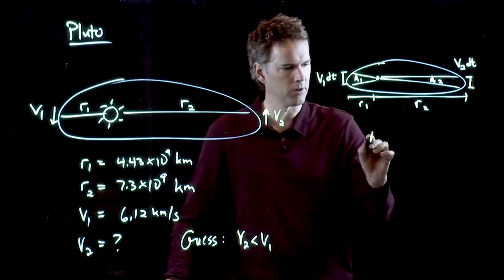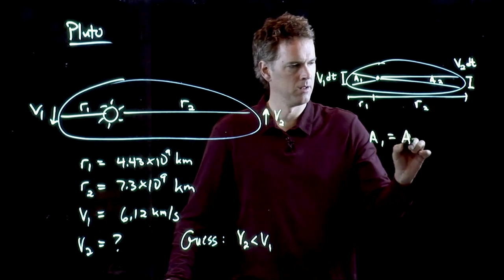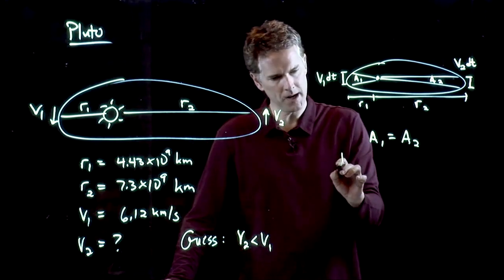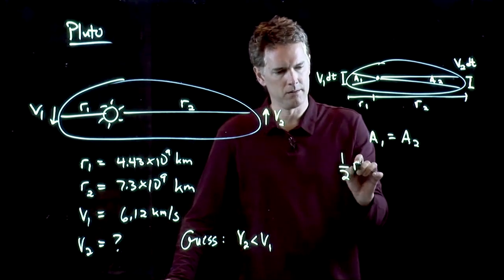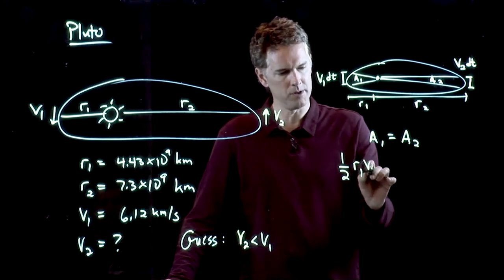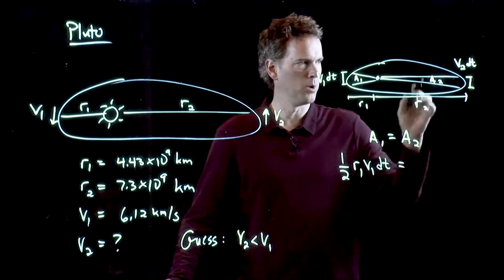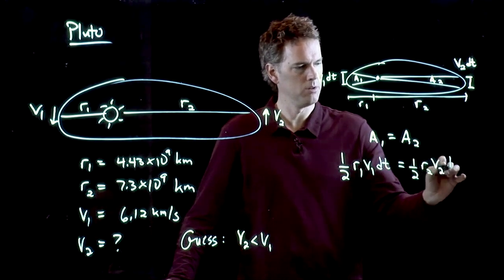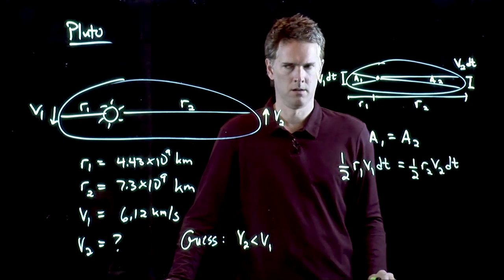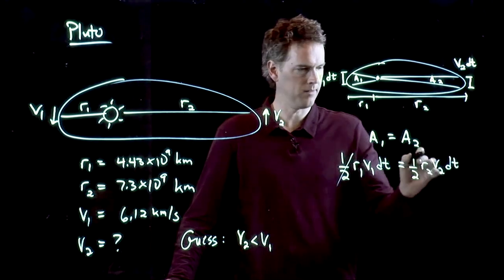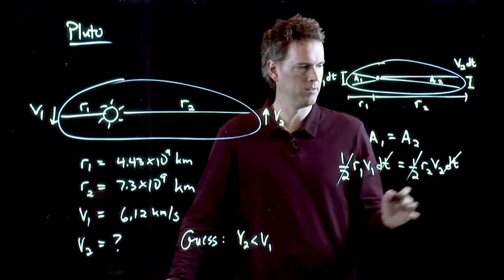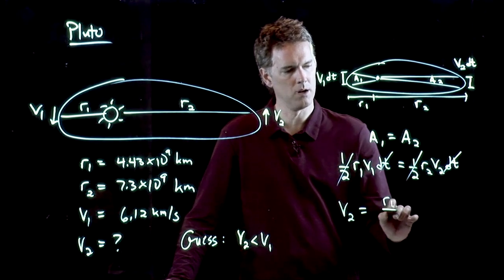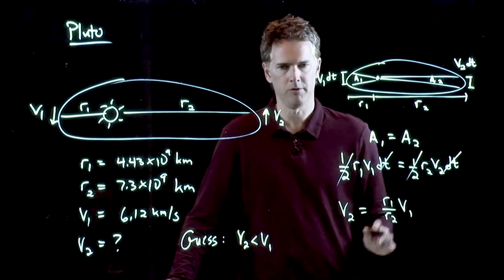Right? And so if the areas are the same, then what do we have? We know the area of a triangle. It's just one half the base times the height. R1 times V1 times DT. What about A2? It's one half R2 V2 DT. Cross out the halves, cross out the DTs. I get V2 is equal to R1 over R2 times V1.